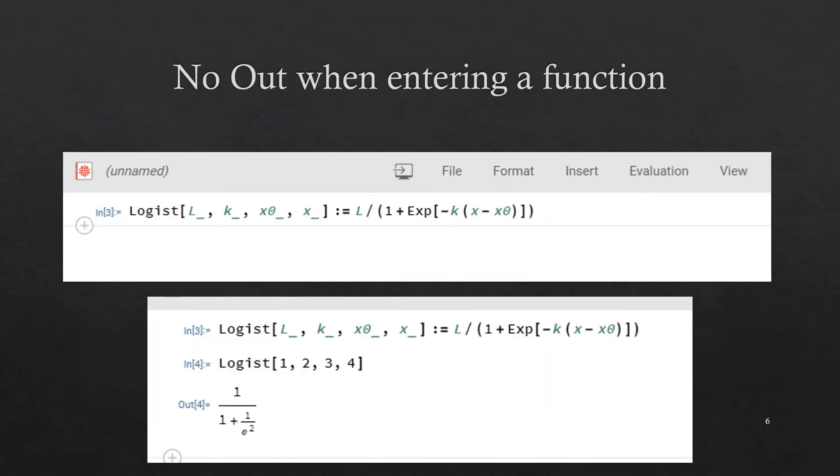I hit shift enter to enter the function. It was called in three because I'd made some mistakes and it remembered that. So I have no in one or in two showing, but I have this in three. But I have no out three, and that's what happens when I define a function: there is no explicit output associated with that input.